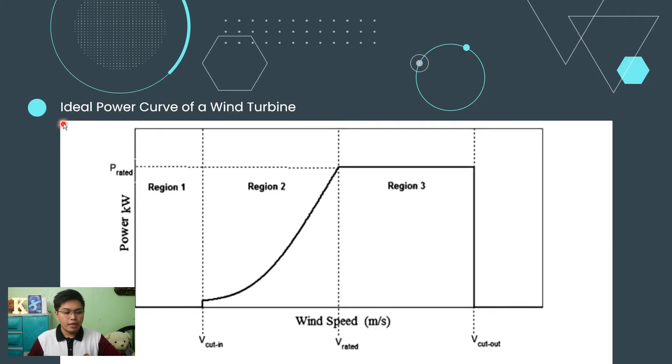What's in the slide right now is the ideal power curve of a wind turbine. Wind turbines are controlled to operate only in a specified range of wind speeds bounded by the cut-in and cut-out speeds. Beyond these limits, the turbine should be stopped to protect both the generator and the turbine. In the figure, it can be observed that there are three different operational regions.